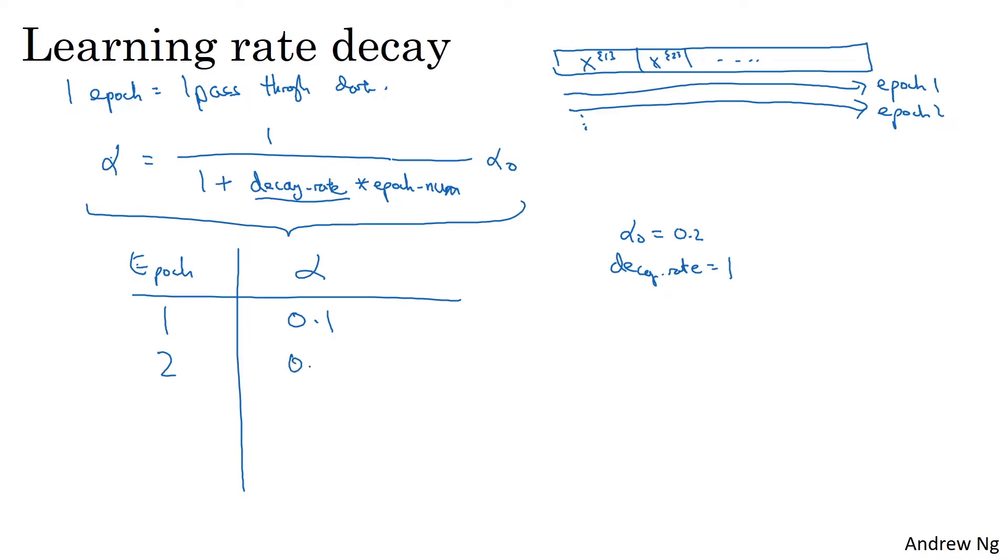On the second epoch, your learning rate decays to 0.67. On the third, 0.5. On the fourth, 0.4, and so on. And if you evaluate more of these values yourself and get a sense that, as a function of your epoch number, your learning rate gradually decreases according to this formula up on top.